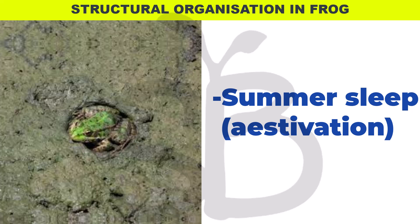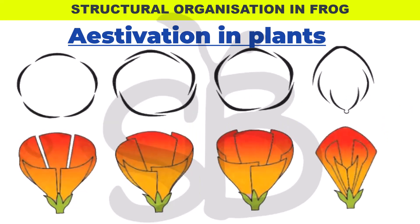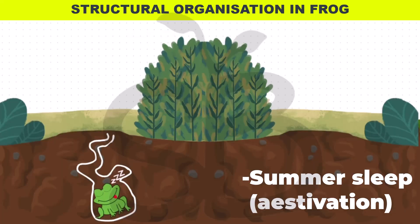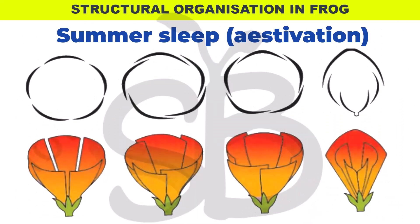Note that the term estivation is also used in Morphology of Flowering Plants, where it refers to the arrangement of petals or sepals in a flower bud — with types such as valvate, twisted, and imbricate estivation. In animals, however, estivation specifically means summer sleep.